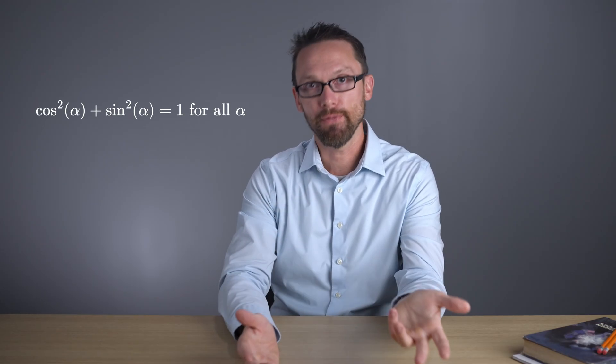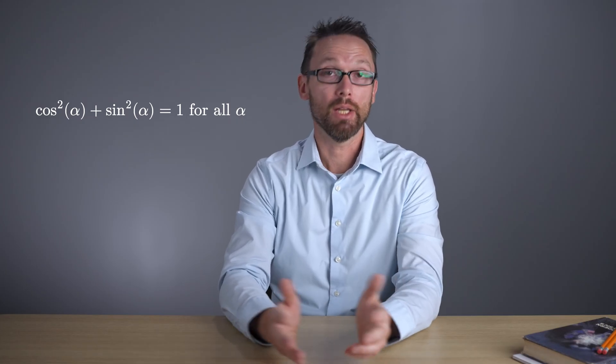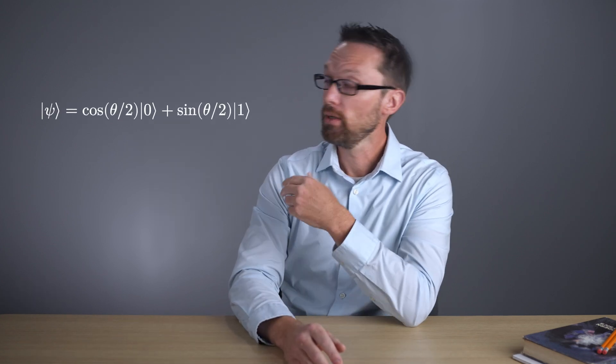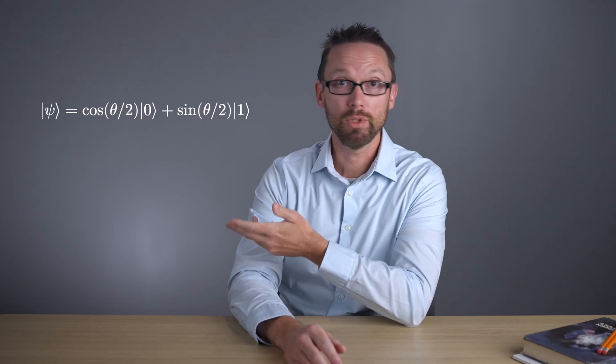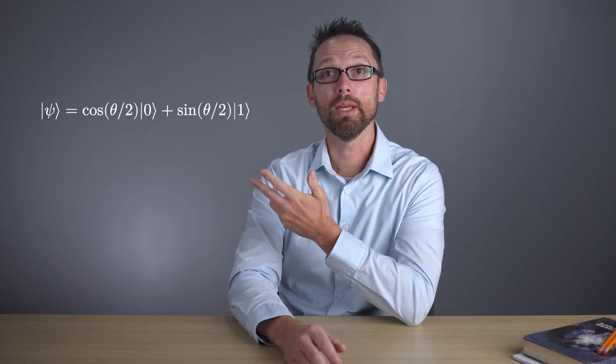One way of ensuring that the probabilities sum to one is to write the variables a and b using sine and cosine functions, since sine of alpha squared plus cosine of alpha squared is one for all angles alpha. So you'll sometimes see states written like this: cosine of theta over two times the state zero plus sine of theta over two times the state one.